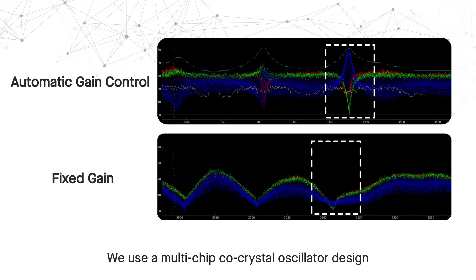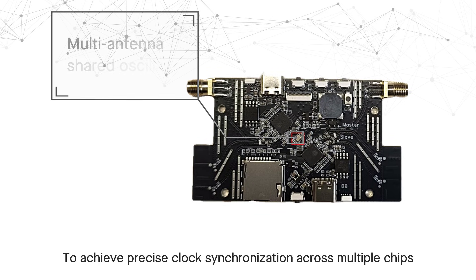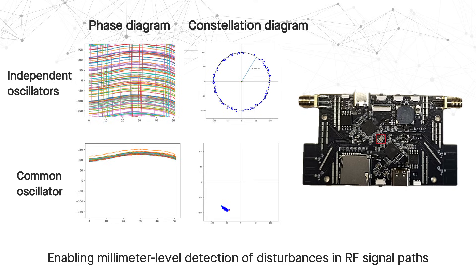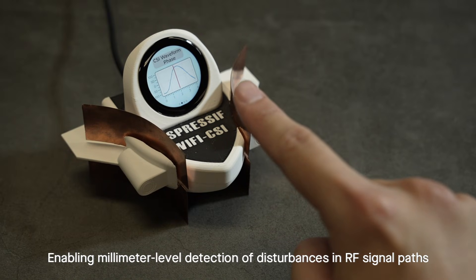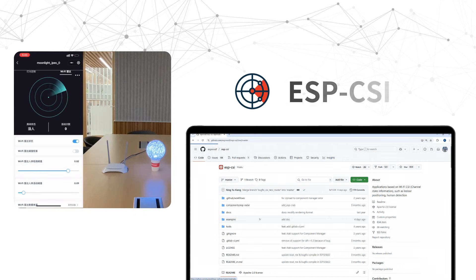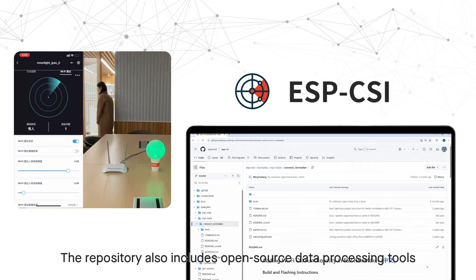To achieve precise clock synchronization across multiple chips, enabling millimeter-level detection of disturbances in RF signal paths. Espressif provides use cases for motion and presence detection. The repository also includes open-source data processing tools.